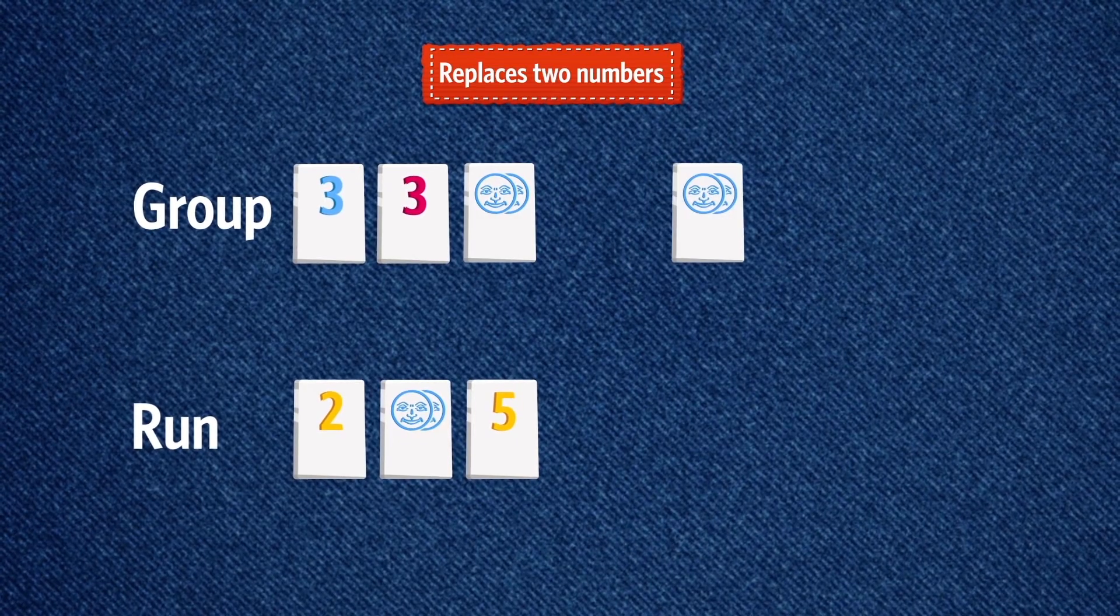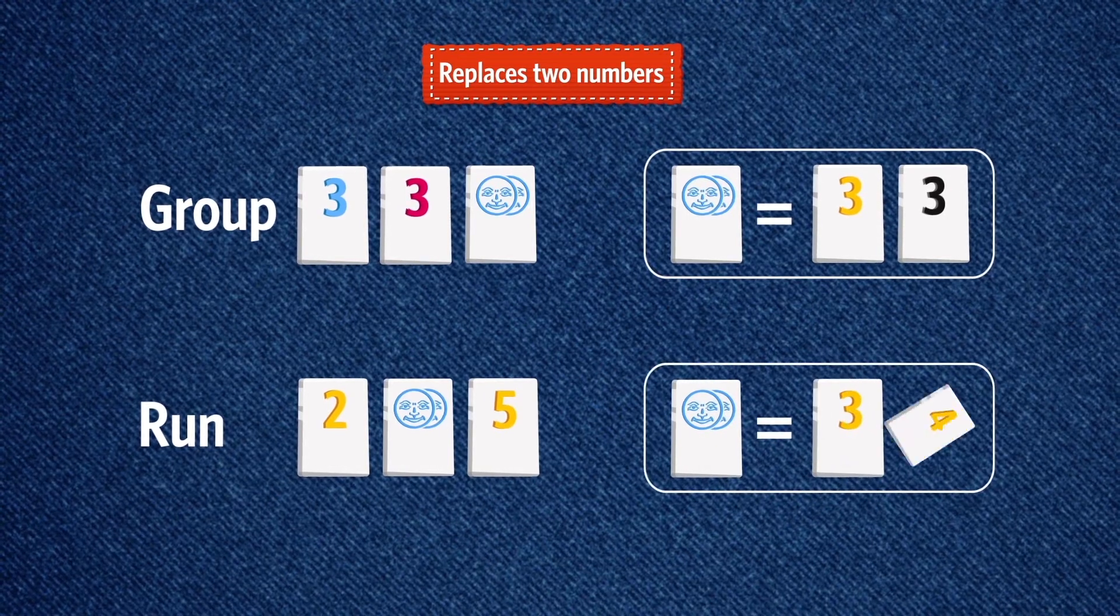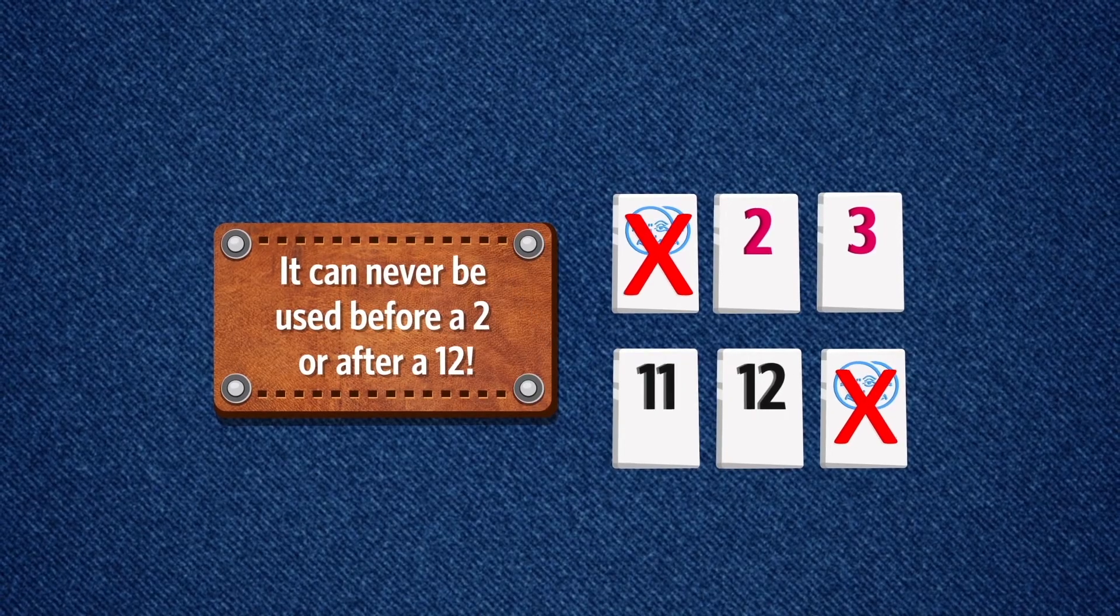Group: the joker represents yellow three and black three. Run: the joker represents yellow three and yellow four. It can never be used before a two or after a twelve.